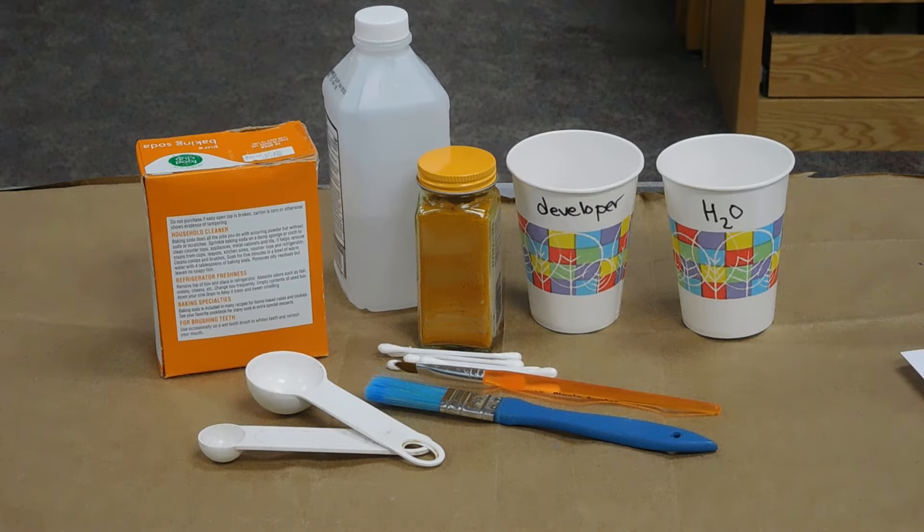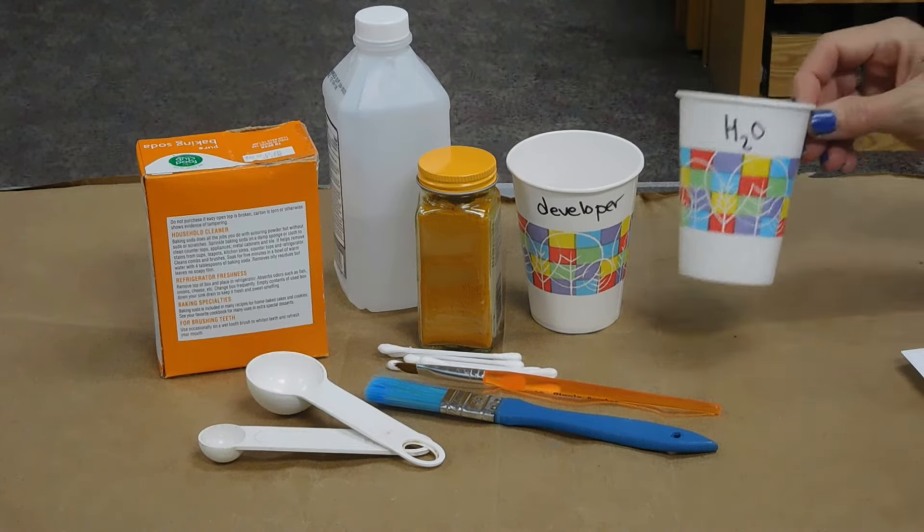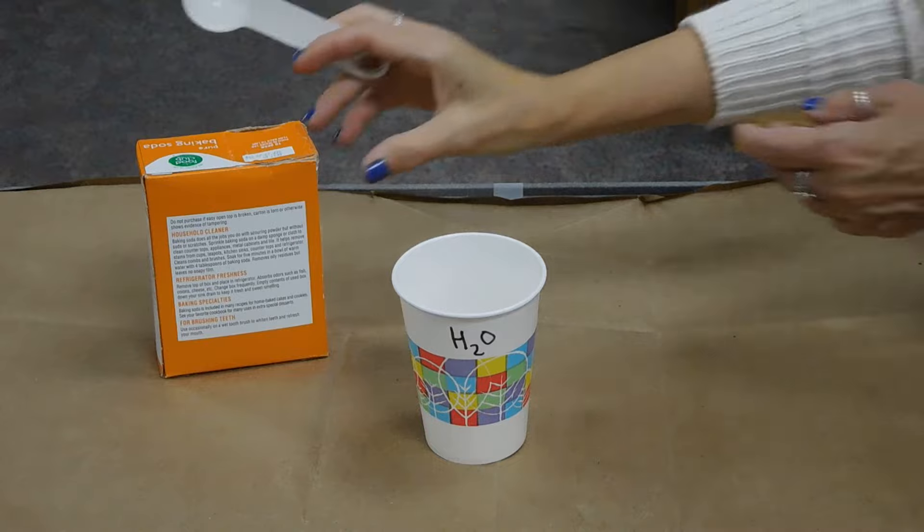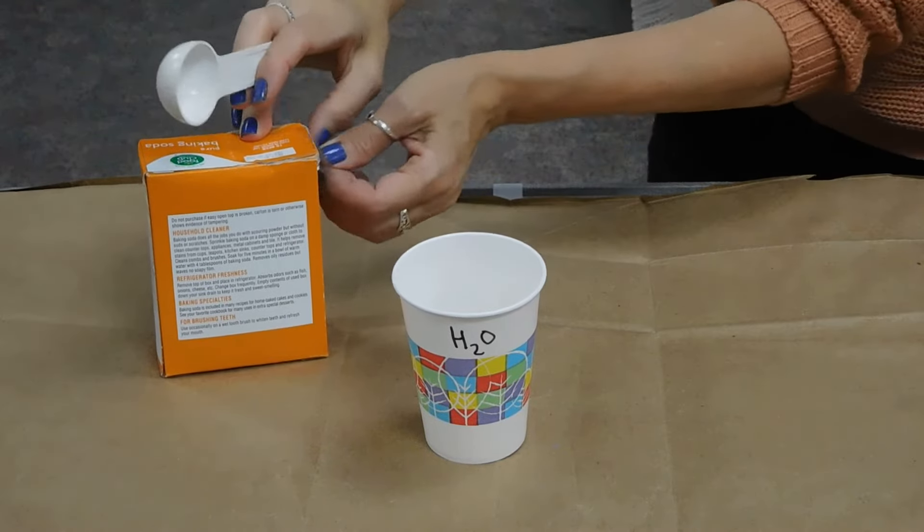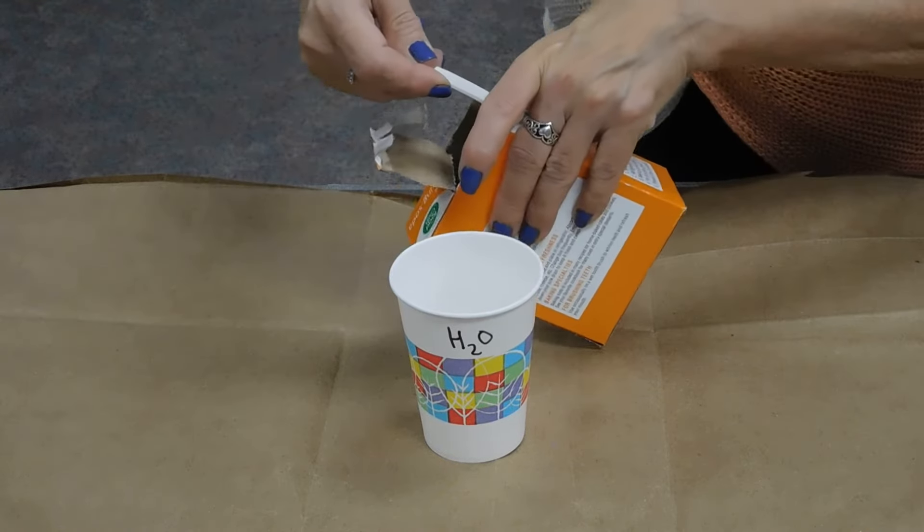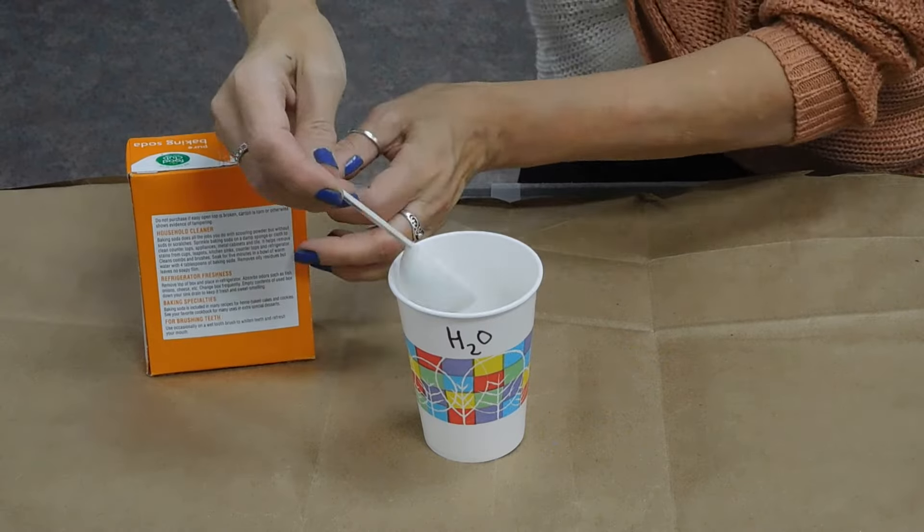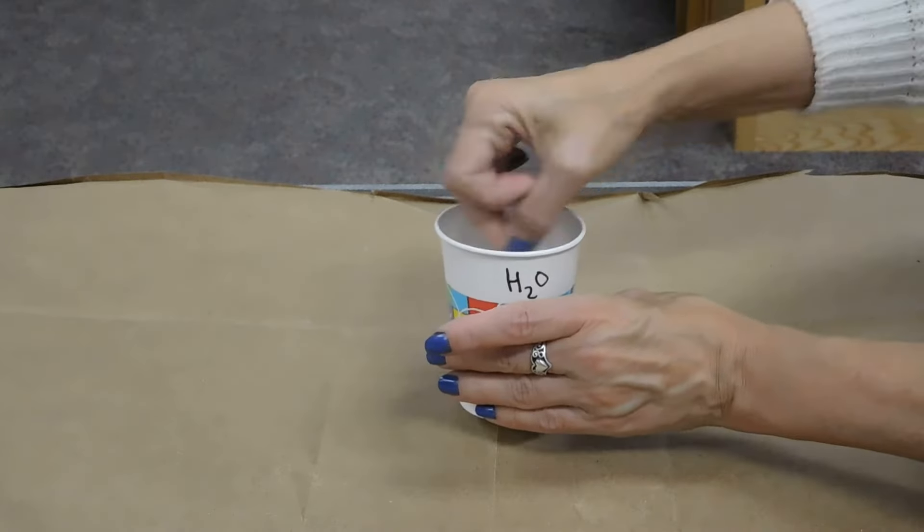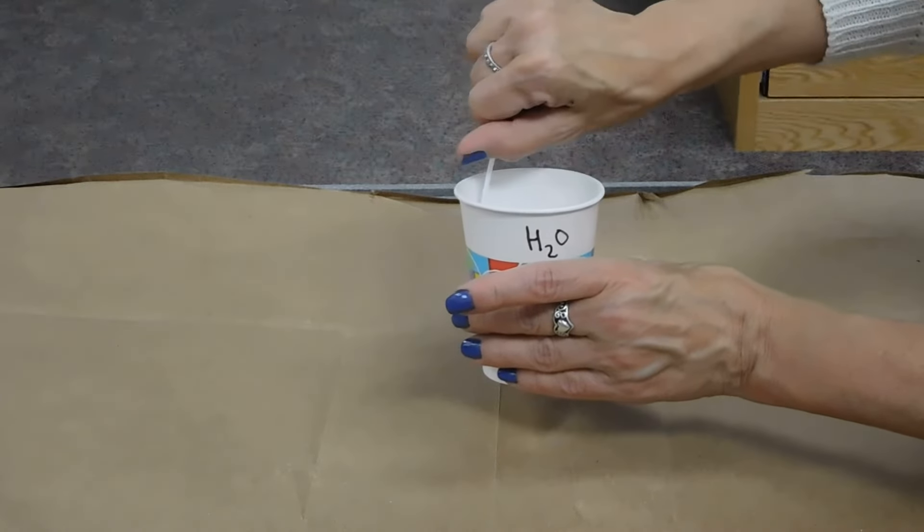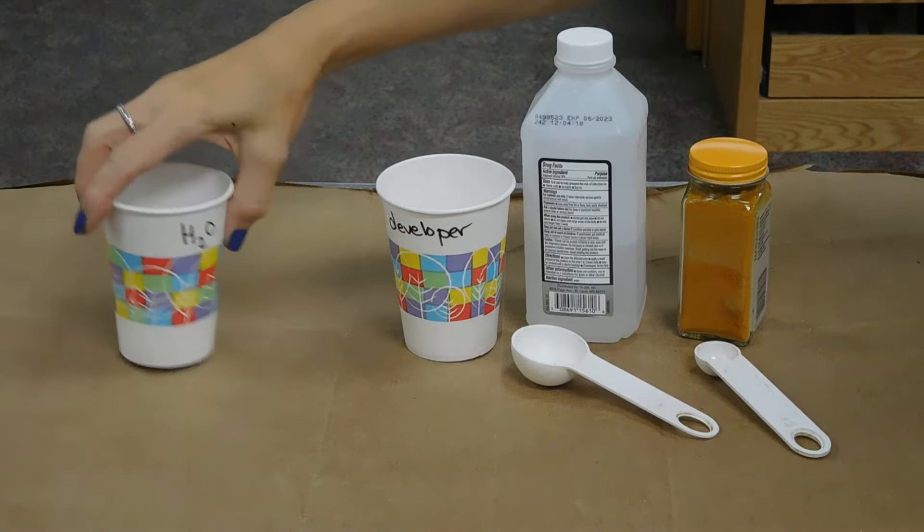So here is what we are going to do. To make the ink we're going to take a tablespoon of water. Then I will measure a tablespoon of the baking soda and mix it right in there. And since I will be using the cotton swab for painting I'm just going to mix it up there with the cotton swab. So I've set that on the side.